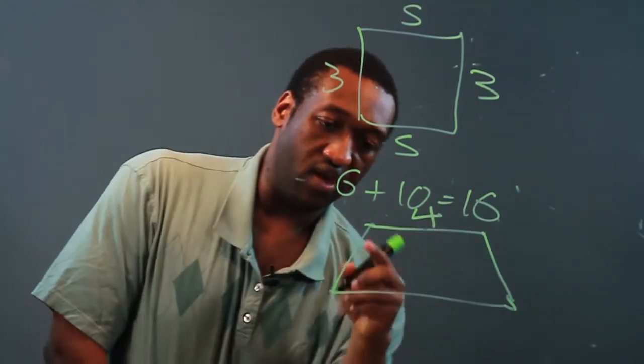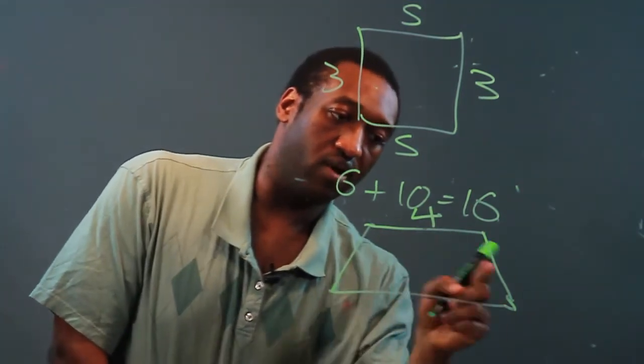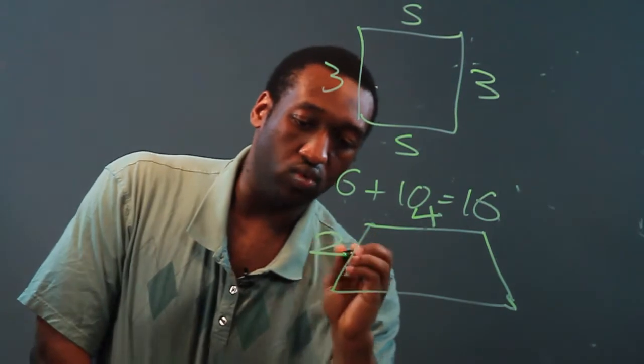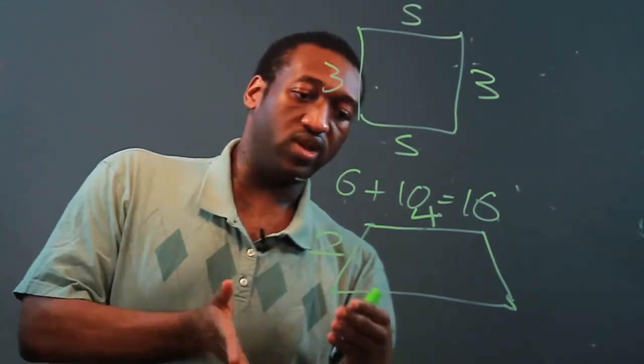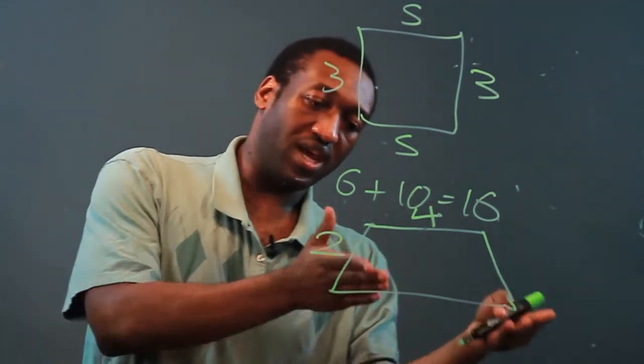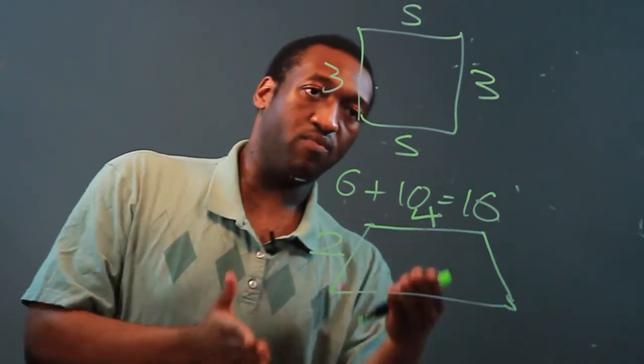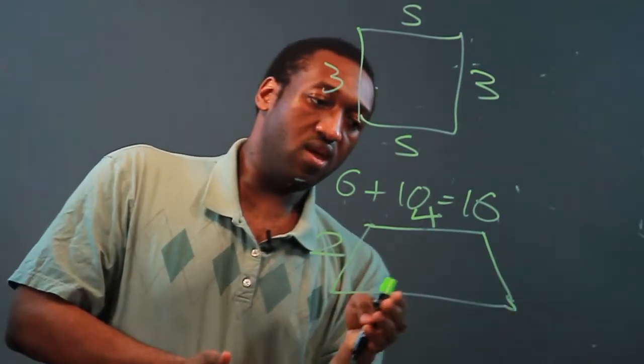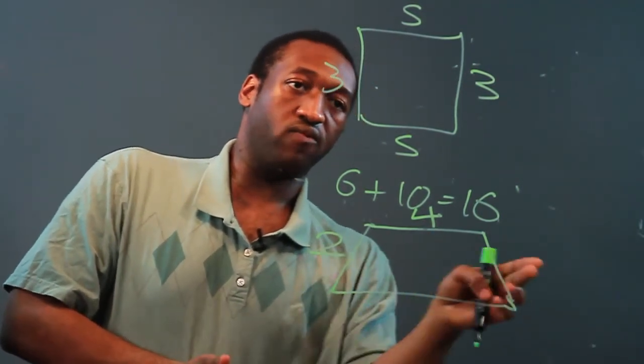And one of the legs, which are the non-parallel sides, is two. Now since we don't know that opposite sides are equal, we can't find the perimeter. There's no way we can find the other two sides without more information.